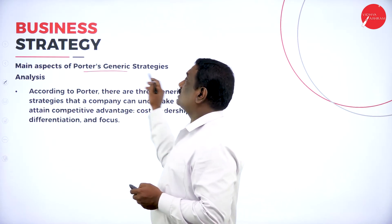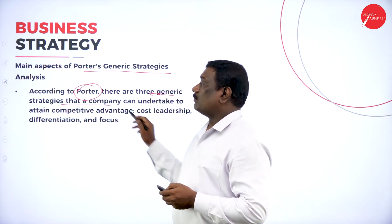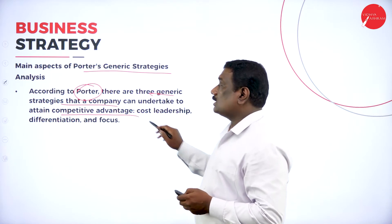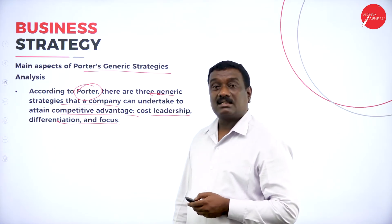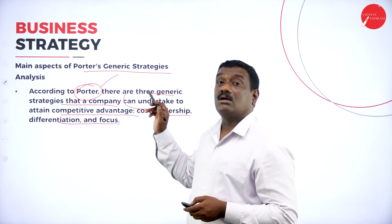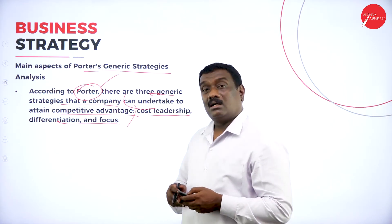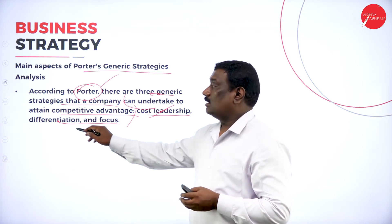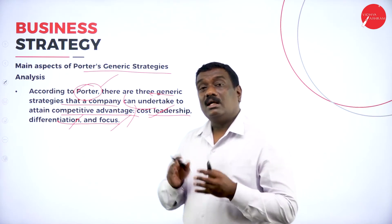According to Porter, there are three generic strategies a company can undertake to attain competitive advantage: cost leadership, differentiation, and focus. A company can attain competitive advantage by lowering prices through cost leadership, differentiating its products from competitors, and focusing mainly on the product it is going to sell in the competitive market.